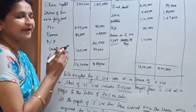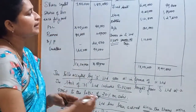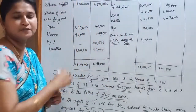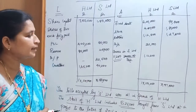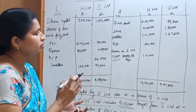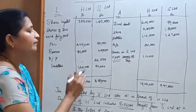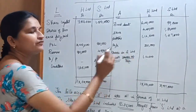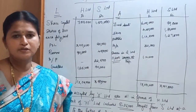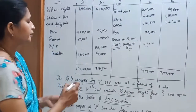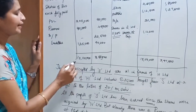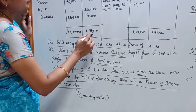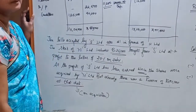From this we can find out that H Limited is the holding company and S Limited is the subsidiary company. The number of shares purchased by H Limited from S Limited is 11,250 at a cost of Rs.1,12,500. The total of the balance sheet for H Limited is Rs.30,50,000 and for S Limited is Rs.3,97,500.